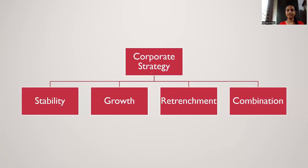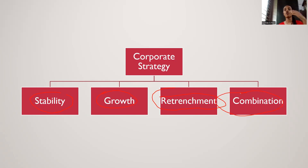Corporate level strategies can have four types. The first is the stability strategy, next is the growth strategy, then comes the retrenchment strategy. Combination strategy is not a different type — it is the combination of all the other three strategies.